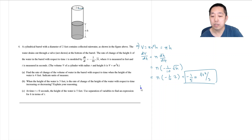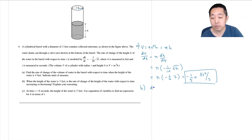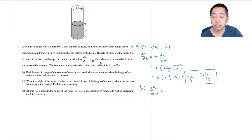Part B: when the height of the water is three feet, is the rate of change of the height with respect to time increasing or decreasing? So I need to find whether dh/dt is increasing or decreasing, which means I need to find the derivative of dh/dt. I write dh/dt as negative one-tenth times h to the one-half, then take the derivative.